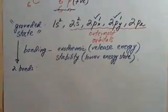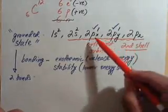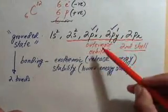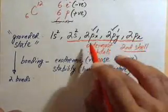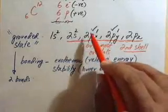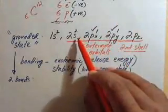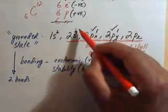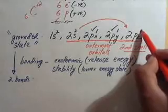All these orbitals are in the second shell, which means they pretty much have similar energy levels. There isn't a lot of difference in the energy levels of the 2s orbital and the 2p orbitals. The 2px, 2py and 2pz orbitals are present at exactly the same energy level, but the 2s orbital is slightly lower in energy. Since they are pretty much at the same energy level, if this electron is given a very small amount of energy, it can jump to the 2pz orbital.